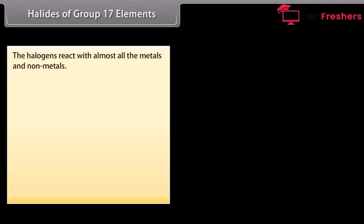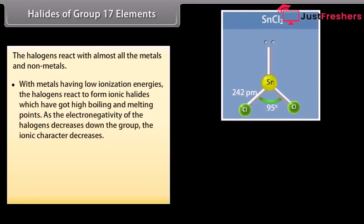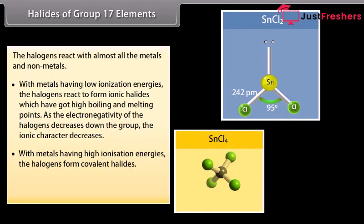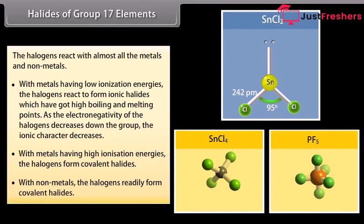The halogens react with almost all metals and non-metals. With metals having low ionization energies, halogens form ionic halides with high boiling and melting points. As electronegativity decreases down the group, the ionic character decreases; for example, SnCl2 and PbCl2. With metals having high ionization energies, halogens form covalent halides, for example SnCl4 and PbCl4. With non-metals, halogens readily form covalent halides, for example PF5 and PCl3.